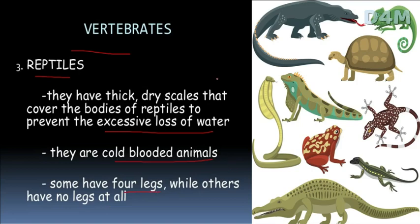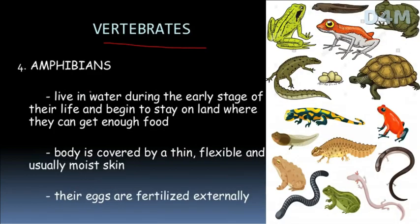The next vertebrate is amphibians. They live in water during the early stage of their life, and later move to land. They can also live in water. They have moist skin. Their eggs are fertilized externally.